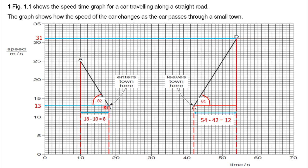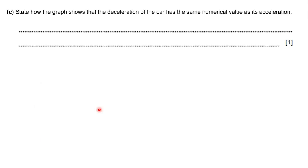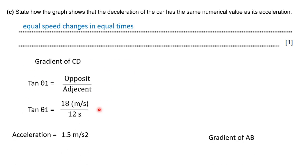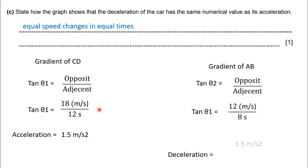After simplifying it, we can get the numerical value of deceleration as 1.5 meters per second squared. Now you can see we got the same numerical value for both acceleration and deceleration. We can easily answer this one mark question within a few minutes.